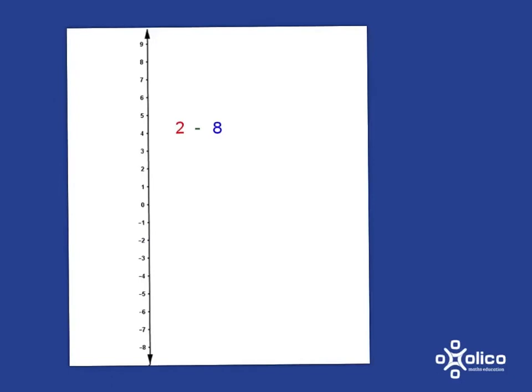Let's have a look at another calculation: 2 subtract 8. We go through the steps of where do we start, are we going up or down, and how many steps. We don't want to do the 8 steps individually; instead, we're going to do a jump to 0 to be more efficient. 2 subtract 8: we start at 2, subtract so we're going down, and we need to go 8 steps down. That's 2 steps to 0, and we need 6 more steps to make it 8 steps in total. So we end at negative 6 — 2 subtract 8 is negative 6.